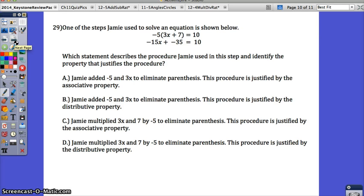Number 29. Really, you don't have to solve anything. You just need to describe what's happening. I always recommend that you look at the problem first, come up with some ideas, then look at the options. One of the steps Jamie used to solve an equation is shown below. Which statement describes the procedure Jamie used in this step and identifies the property? Before you look at A through D, look at the problem. See what he did. Negative 5 is on the outside of the parentheses. What would you do? Somehow he got a negative 15x. He multiplied negative 5 times this. He got a negative 35. He multiplied negative 5 times the positive 7.